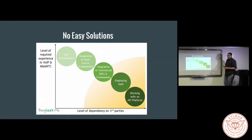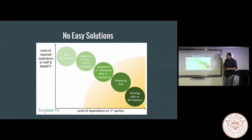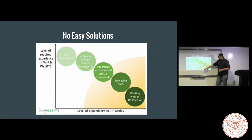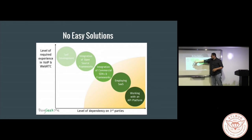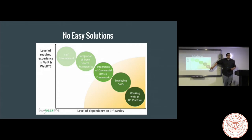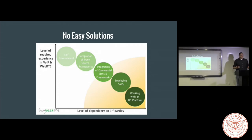There are no easy solutions out of the box where you add five lines of code. It kind of goes down this graph — on one axis is how much experience you need, and the other is how dependent you are upon third parties. You can do it all yourself, or you just find a plug-in like Twilio, which is a widget you can plug in that gives you all the capabilities, but you're paying them per minute.